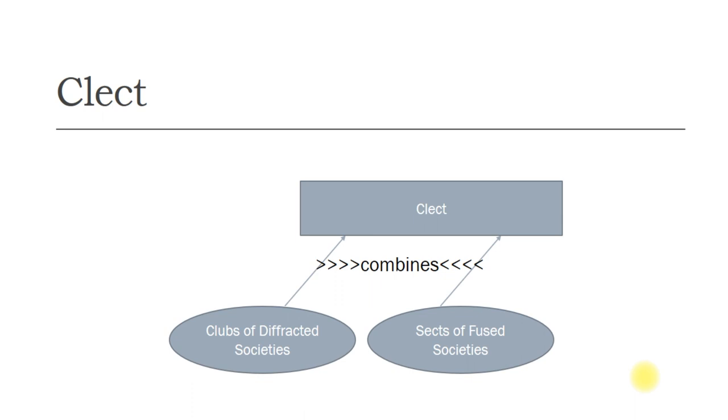CLECT represents officials belonging to a particular group or community, and the government officials who belong to that only serve members of the CLECT and ignore everybody else. A CLECT normally combines clubs of diffracted societies with sects of fused societies.